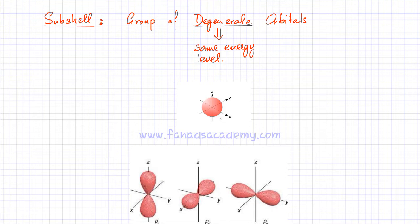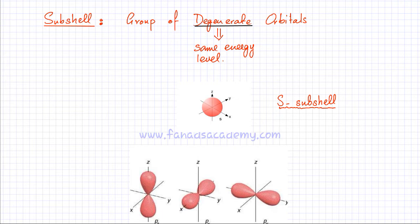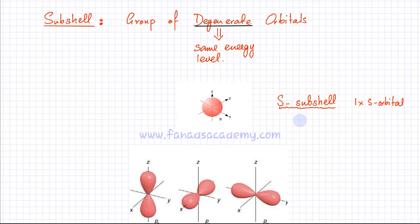The first subshell is the S subshell. An S subshell has only one orbital — the S orbital. When you talk about the S subshell or S orbital, you're basically talking about the same region where you'll find an electron. Since an orbital holds a maximum of two electrons, the S subshell can accommodate a maximum of two electrons. This is the simplest subshell.